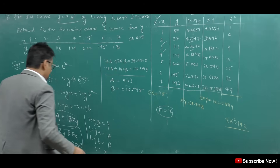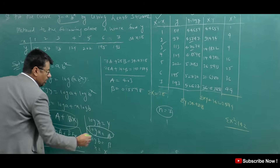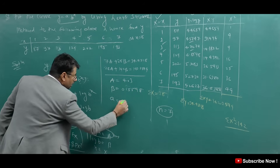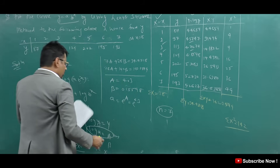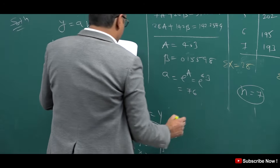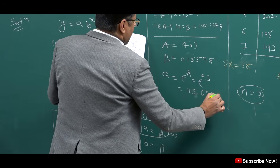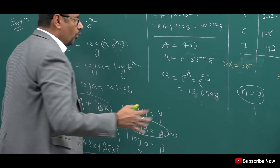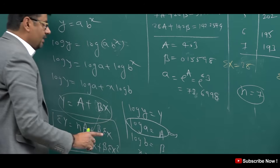Solving the equations, capital A is 4.3 and capital B is 0.15598. But I will tell you: capital A is log of small a. So to get small a, we remove the log, meaning small a equals E to the power of capital A, which is E to the power of 4.3. Using a calculator, the value of small a is 73.6998.